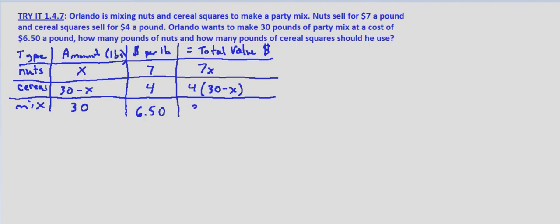$4 per pound times 30 minus x pounds. And then 30 times $6.50, because it's 30 pounds of party mix, times $6.50 per pound. So now we can set up our equation.